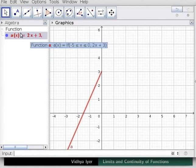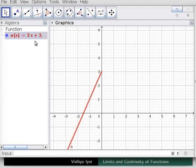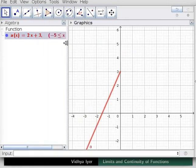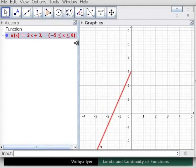The equation a of x equals 2x plus 3 where x varies from minus 5 to 0 appears in Algebra View. Drag the boundary to see it properly. Its graph is seen in Graphics View.